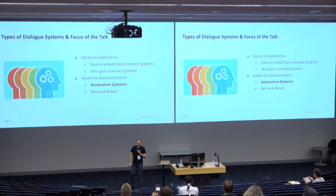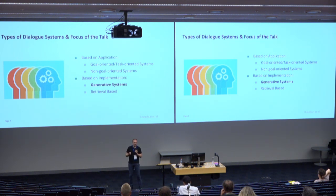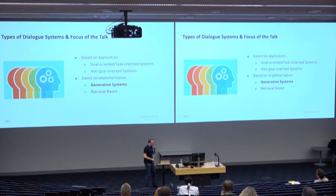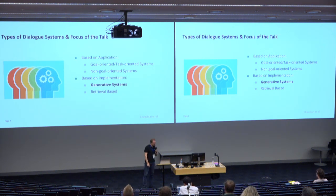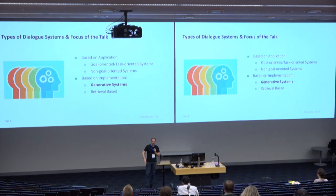Dialogue systems can be put into several groups according to application and implementation. In terms of application, we mostly distinguish between goal-oriented and non-goal-oriented dialogue systems. Goal-oriented systems try to achieve a specific task, such as restaurant booking. Non-goal-oriented is more chit-chat dialogue or questions that don't follow a specific end goal. In terms of implementation, there are generative systems, which can create arbitrary responses, and retrieval-based systems, which select from a predefined set of responses.